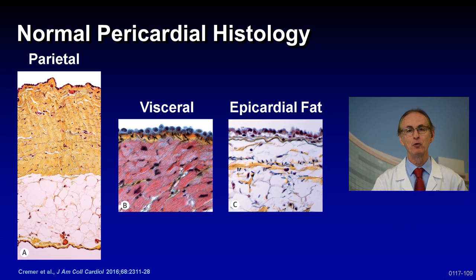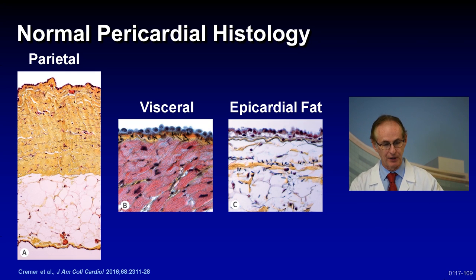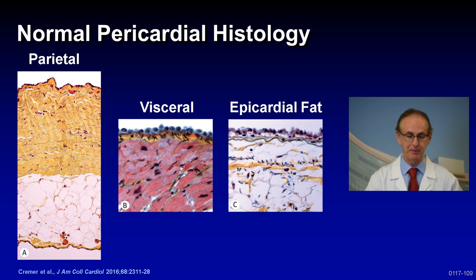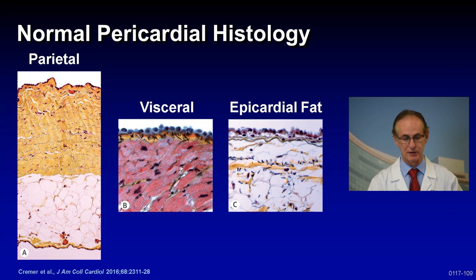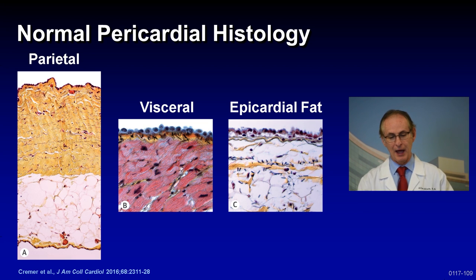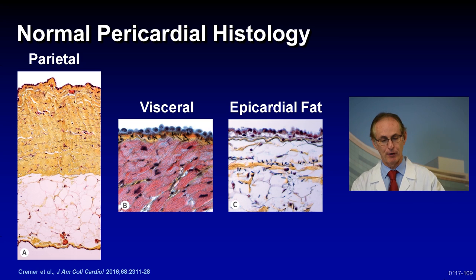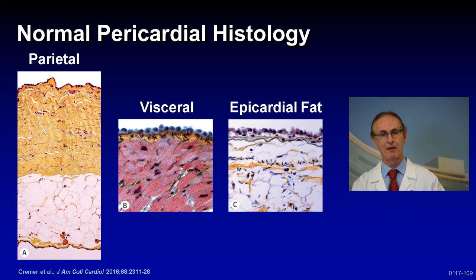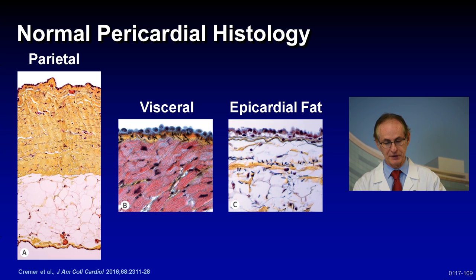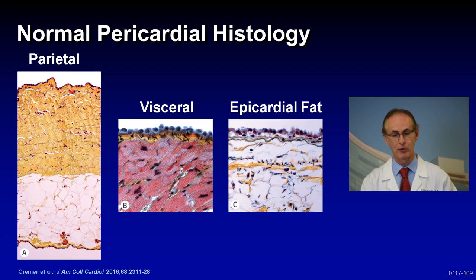Here's an example of normal pericardial histology. On the left you can see the parietal pericardium — there is a mesothelial layer in blue on top and a fibrous layer below. On the right you can see the visceral pericardium where you have mesothelial cells and then the muscle of the myocardium. Sometimes between the epicardium and the muscle, you have a layer of epicardial fat.